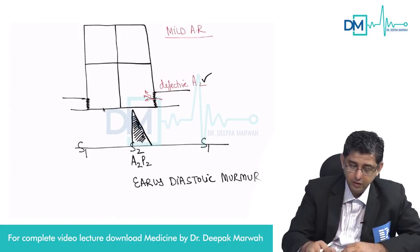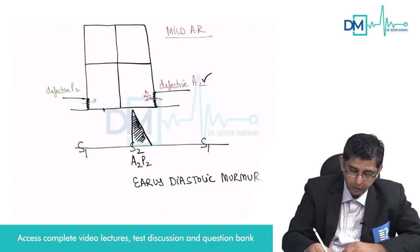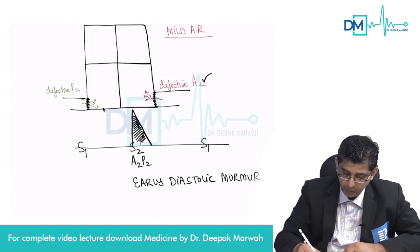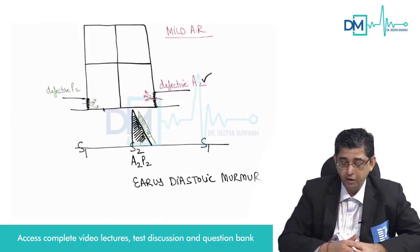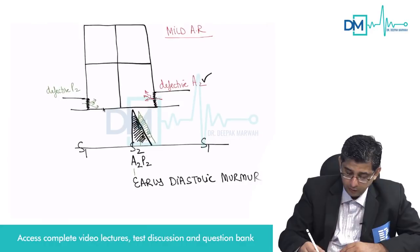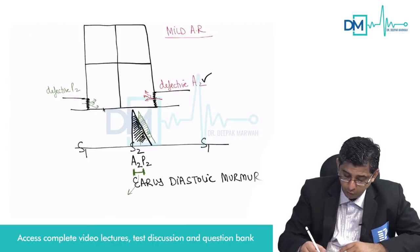Similarly, if a patient has mild pulmonic regurgitation with a defective P2, a little blood will leak back into the heart and produce noise — also called an early diastolic murmur. However, aortic and pulmonic valves don't close together; the splitting of the second heart sound is best heard at the Erb's point, with a time lag of about 30 milliseconds.